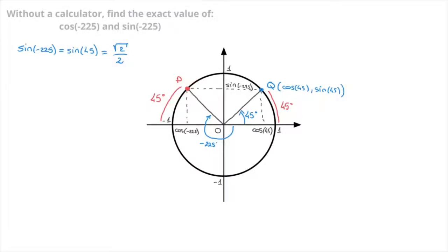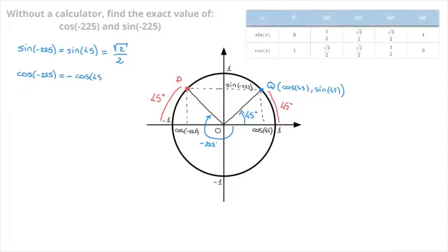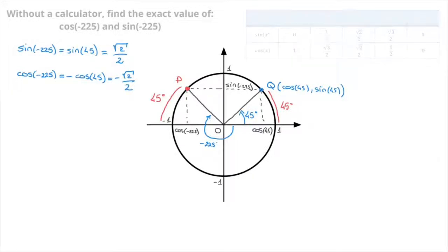Since points P and Q are the mirror images of each other across the vertical axis, their horizontal coordinates will also be the mirror images of each other — they will have opposite values. That allows us to state that cosine of negative 225 equals to negative cosine of 45. Cosine of 45 has a well-known value — it's equal to the square root of 2 over 2. So negative cosine of 45 equals to negative square root of 2 over 2. We have now found both cosine of negative 225 and sine of negative 225.